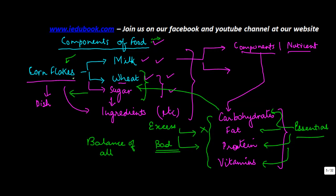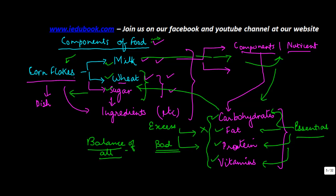What we learnt in this video was that food basically comprises of various dishes that we have over a period of a day. Each dish contains several ingredients, and each ingredient provides us with various nutrients such as carbohydrates, fat, protein, and vitamins. We require a balance of all of them — excess of anything is bad, and if there is a lack, that is also bad and you may need to take medicines or injections to replenish it.